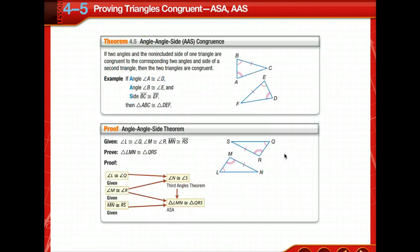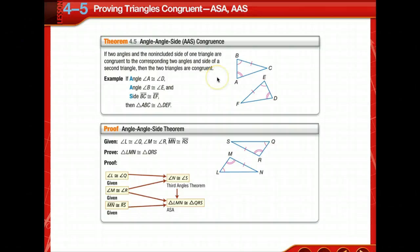Now there's the angle-angle-side congruence theorem. The congruence of two angles and a non-included side are also sufficient to prove two triangles are congruent.